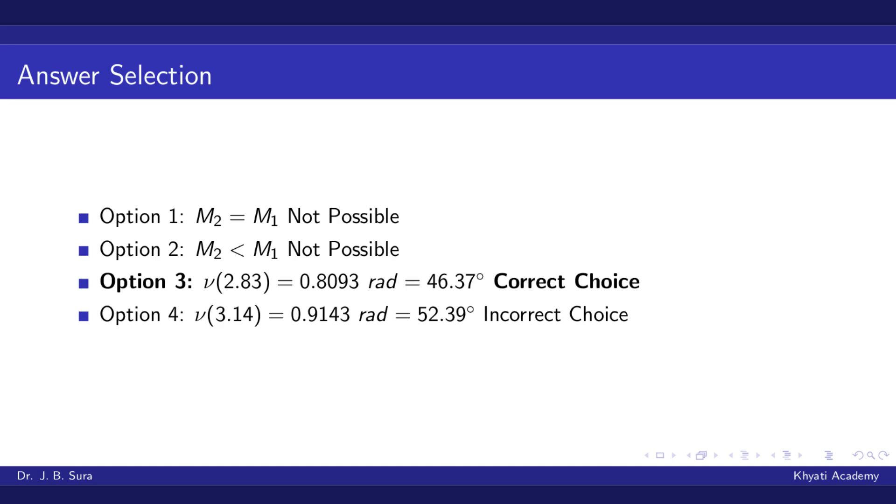And for Mach number equals 2.83, you will get ν as 0.8093 radians, which is equal to 46.37 degrees, which is close to our original answer of 46.38 degrees. So option 3, 2.83, is our correct choice. Thank you.